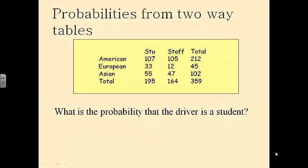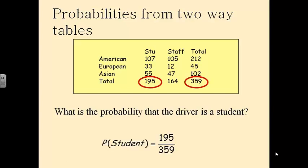You can also find probabilities from two-way tables. Here's a table of different staff and ethnicities. What's the probability that the driver is a student? We go down and find all the students — there are 195 out of the total 359. So probability of a student is 195 out of 359.